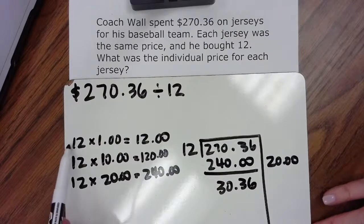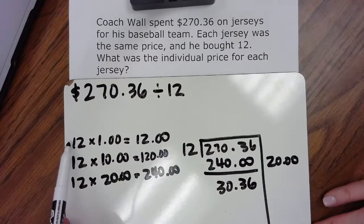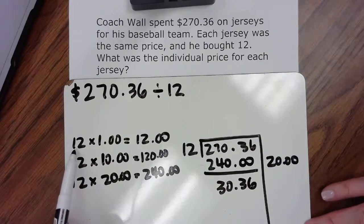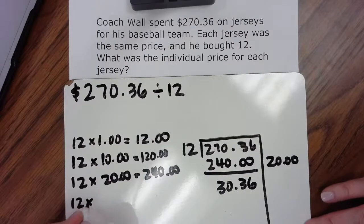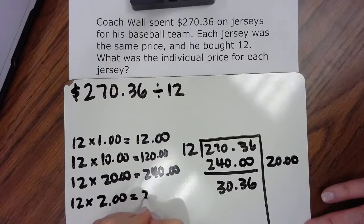So at this point, I'm going to go back up and use this smaller fact and let that help me. 12 groups of $1 is $12. I can get closer to that if I say 12 groups of $2, and so that's going to be $24.